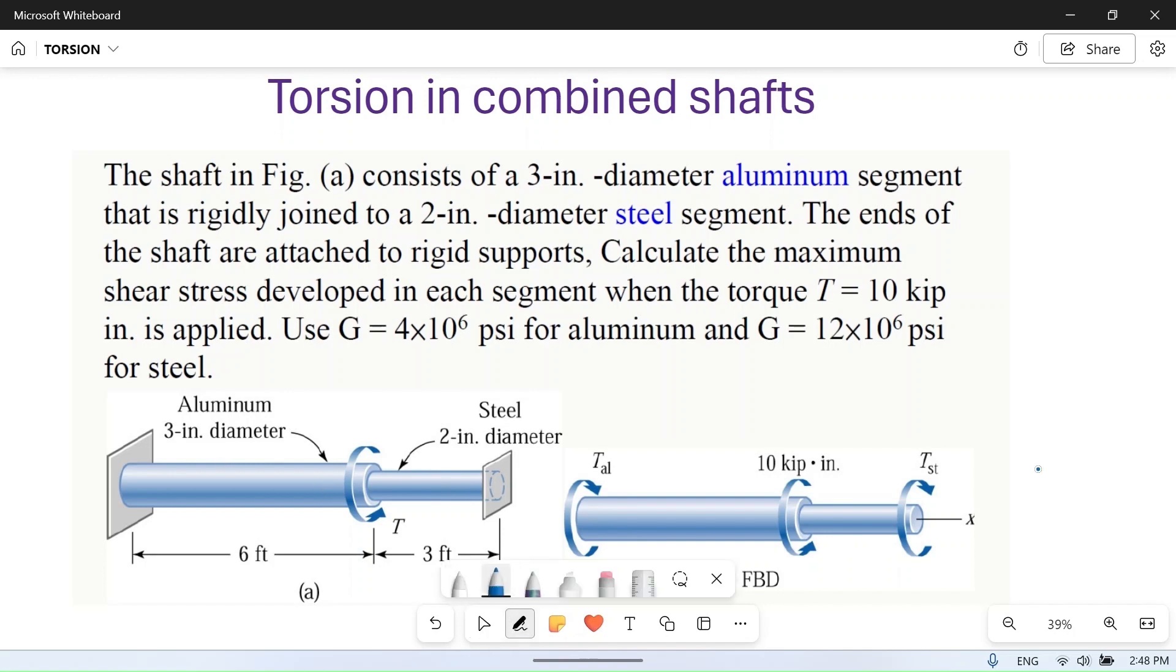Let's see the problem. The shaft in figure (a) consists of a 3-inch diameter aluminum segment, the thicker one, rigidly joined to a 2-inch diameter steel segment.